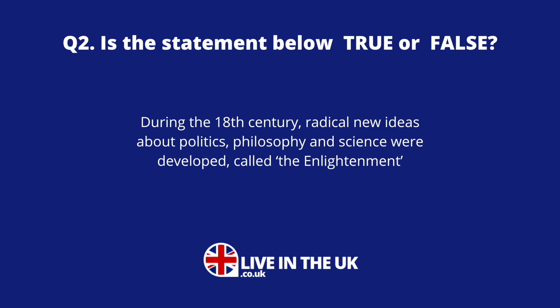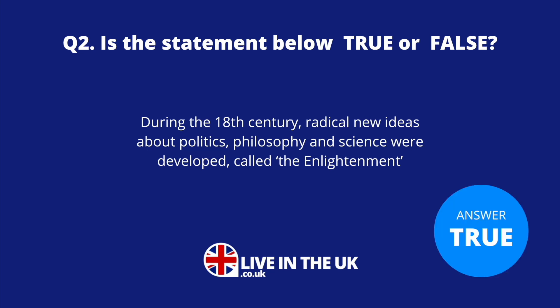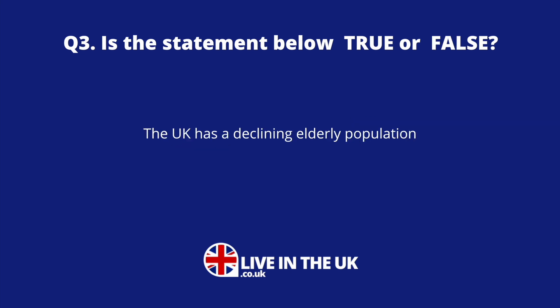Question two: Is the statement below true or false? During the 18th century, radical new ideas about politics, philosophy and science were developed — it's called the Enlightenment. That's true. The Enlightenment happened during the 18th century and involved radical new ideas about politics, philosophy and science.